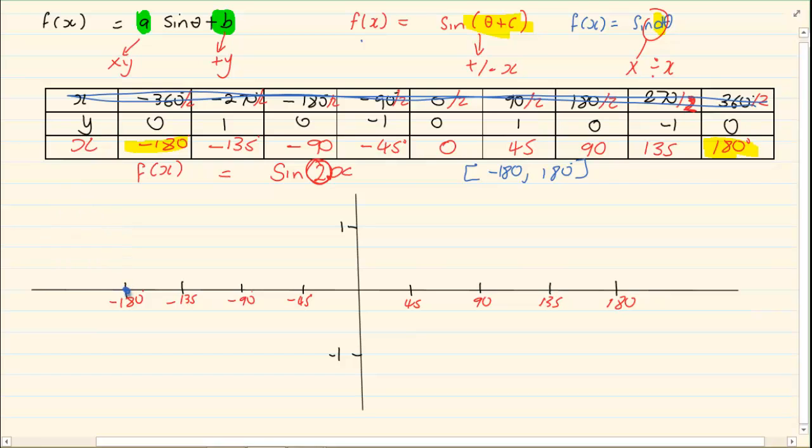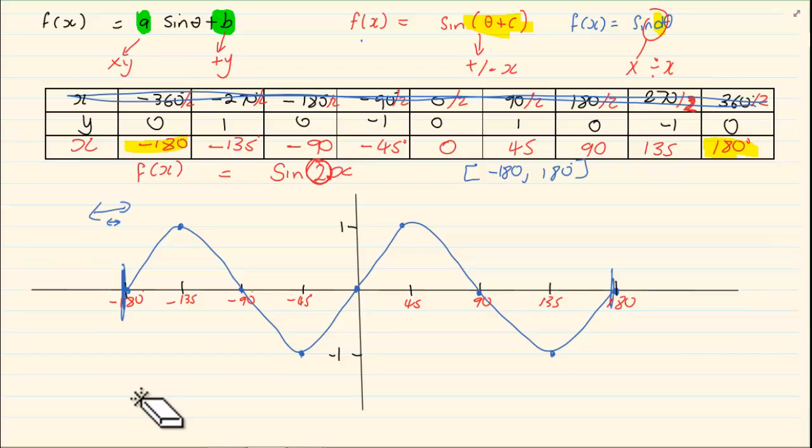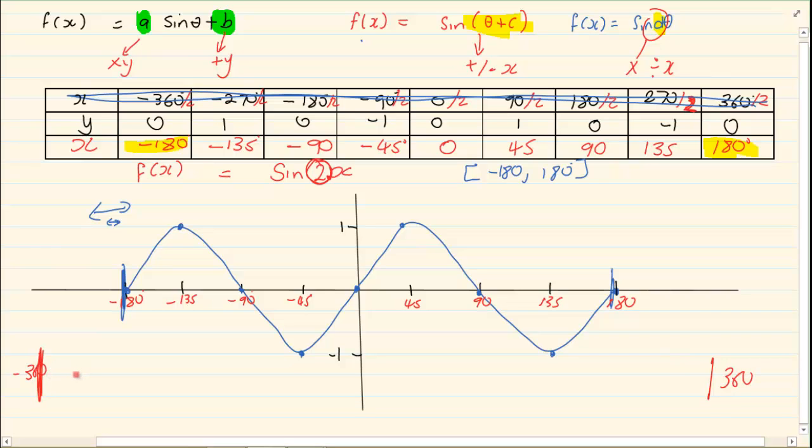Now let us plot minus 180 and 0. We have minus 135 and 1, minus 90 and 0, minus 45 and minus 1, 0 and 0, 45 and 1, 90 and 0. Now if you are joining the dots, what you would notice is that your original graph was going from minus 360 to 360. But now we squashed it. We like compress the graph and we are running from minus 180 to 180.